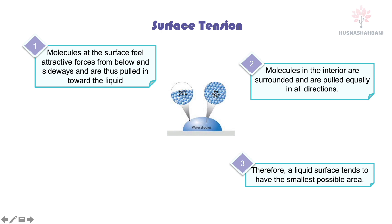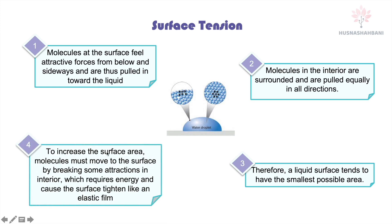Interior molecules of water have a bigger surface area. To increase the surface area, molecules must move from the interior to the surface by breaking some of the attractions in the interior. This requires energy and causes the surface to tighten like an elastic film. That is how surface tension works.